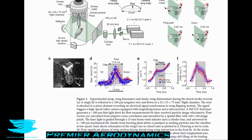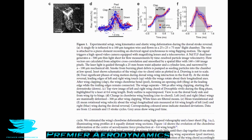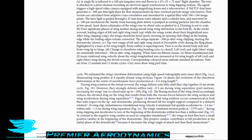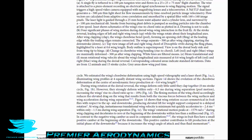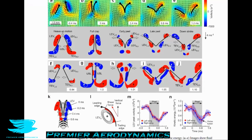The wings of fruit flies have a small positive camber at the beginning of the downstroke. Unlike MAV wings which are typically treated as rigid, insect wings can actually bend. This positive camber contributes to lift production at the initial phase of the downstroke because it increases the wing's angle of attack, and the insects can flex their wings to make flight more efficient.